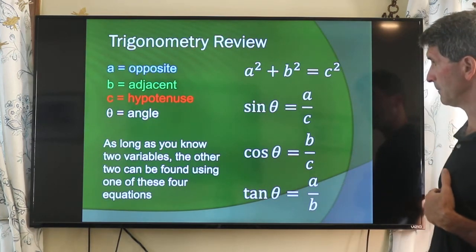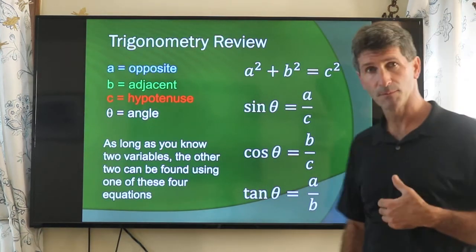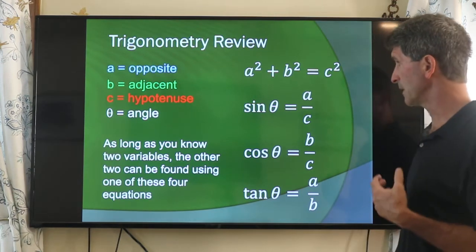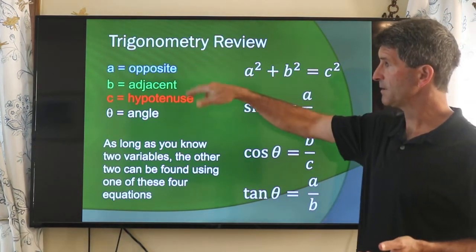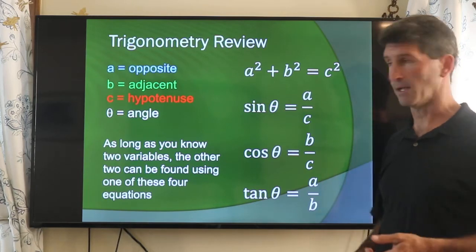So again, for different right triangles, you should be able to be given two of these - a, b, c, or θ - and be able to find the other two.